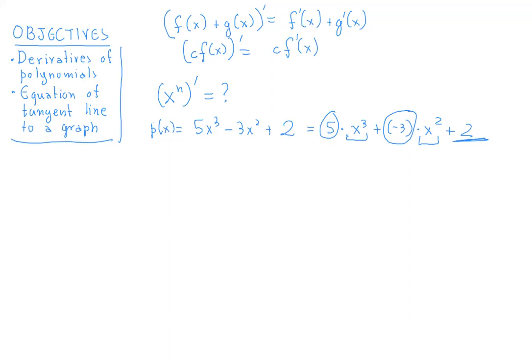Let's start with what the derivative of x^n is, beginning from the very beginning. The derivative of a constant function is 0. The derivative of the function x — whose graph is a straight line with slope 1 — is simply 1 at any point, because its derivative is the slope of that line.